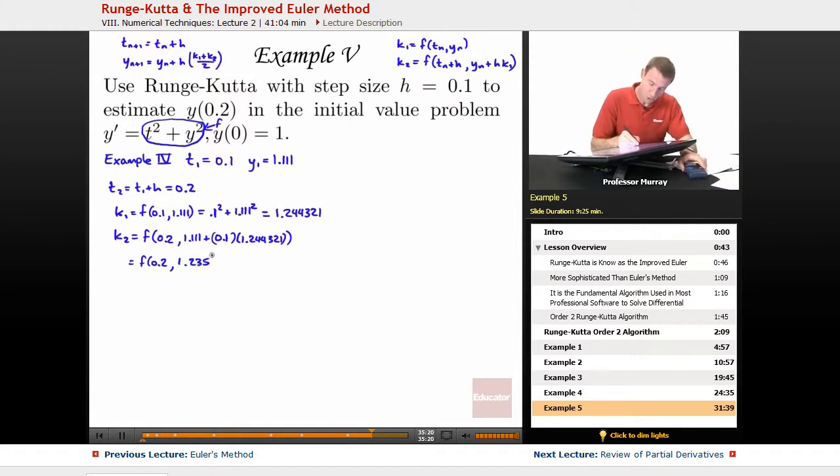So I've got 1.235 here. And if I plug that into f, I've got 0.2 squared plus 1.235 squared. And again, I'm going to calculate that out on my calculator. And I see I've got 1.566 for my k2.